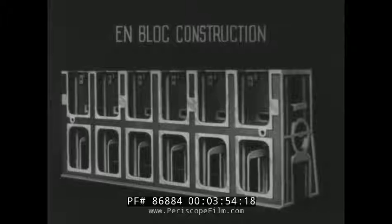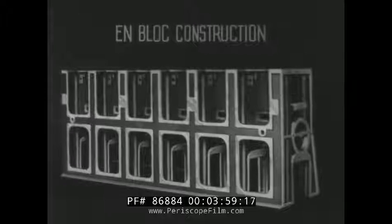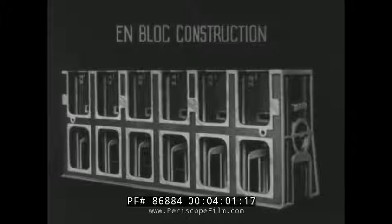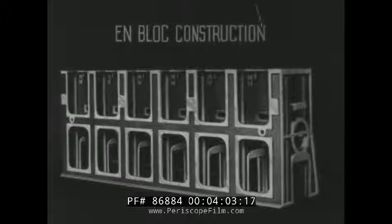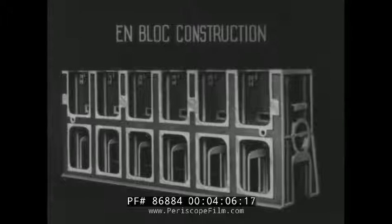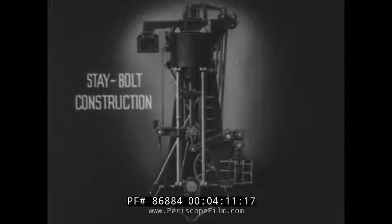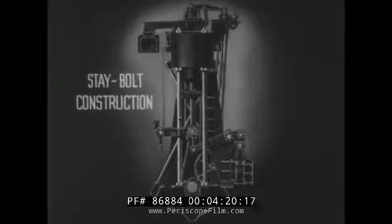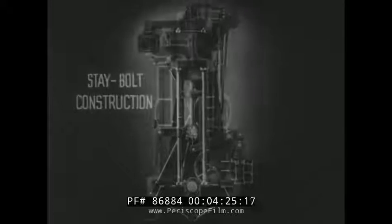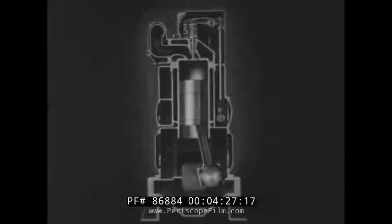In the end block type of construction, the entire crankshaft housing and the cylinders are made in one piece. This construction is generally limited to the smaller size engines. Another design developed to save weight is called the stay bolt or tie rod type, where the cylinders are secured with long rods to the bed plate. The modern engine, however, is usually a combination of these constructions.